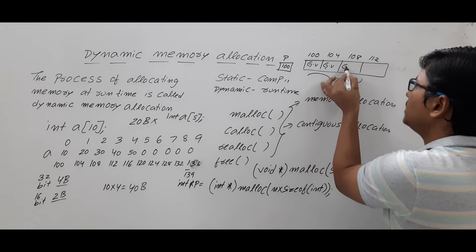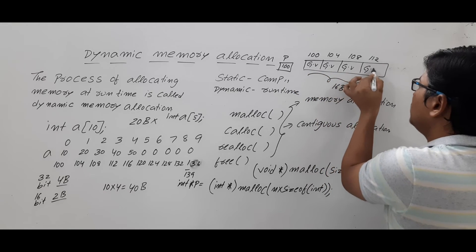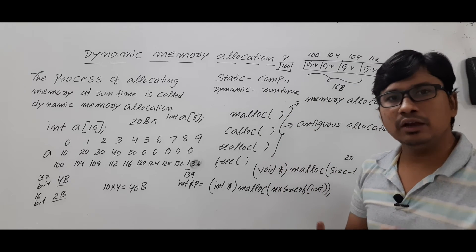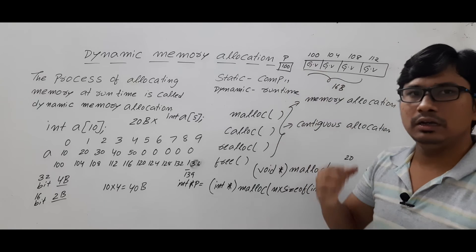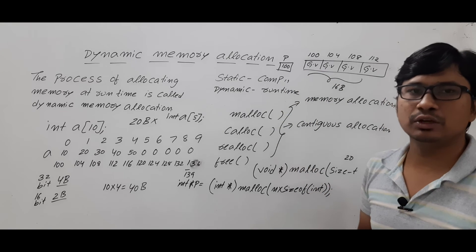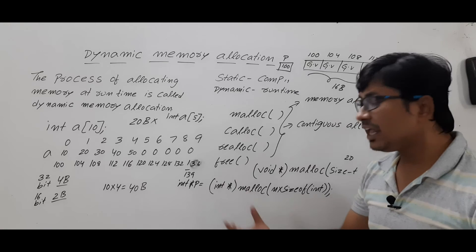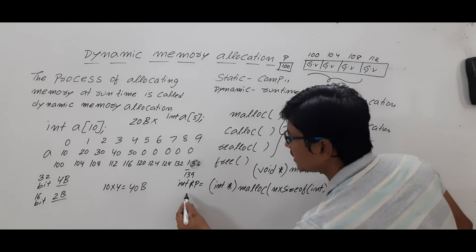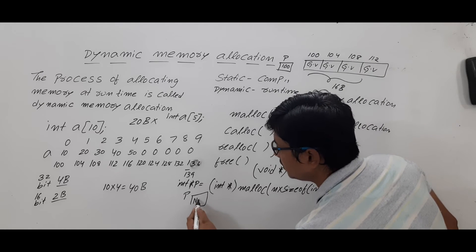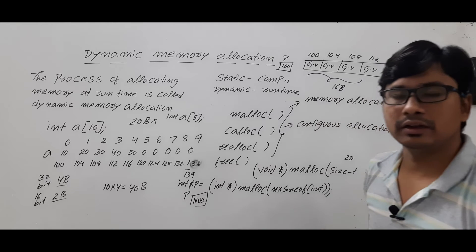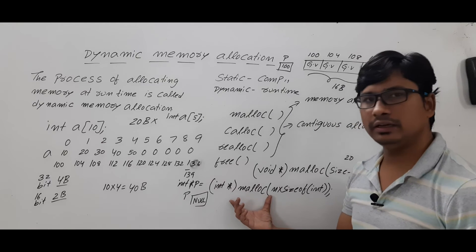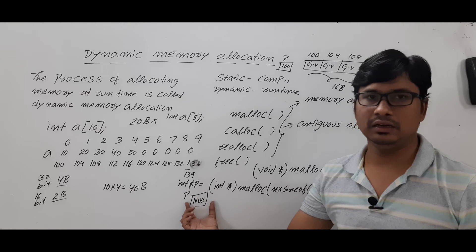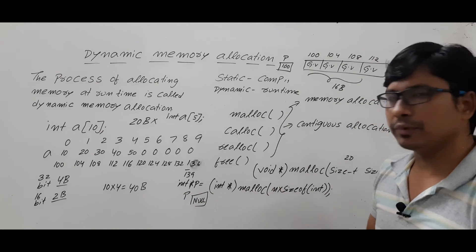If you do not assign any value to the allocated memory and try to print the elements, they will give garbage values. If due to some issue the memory is not allocated, malloc returns a null value to the pointer p. So if memory is not successfully created during runtime, pointer p will have the value null.